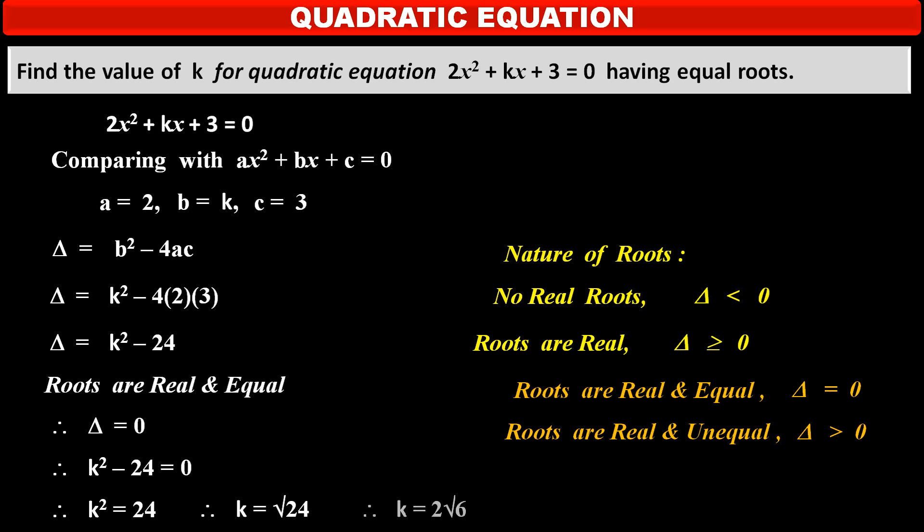Therefore, k = √24. Simplifying, √24 = √(4 × 6), and since the square root of 4 is 2, we get k = ±2√6. This is the value of k in the given quadratic equation: 2√6.